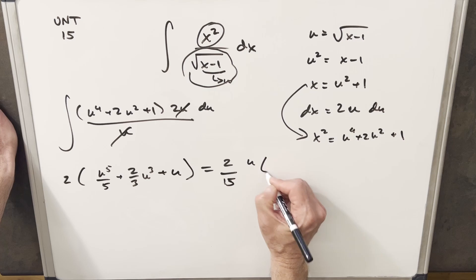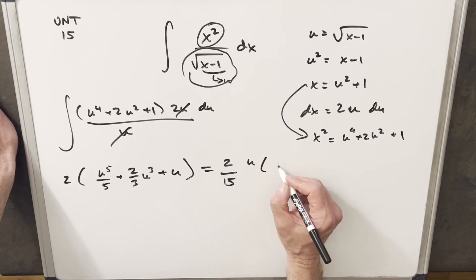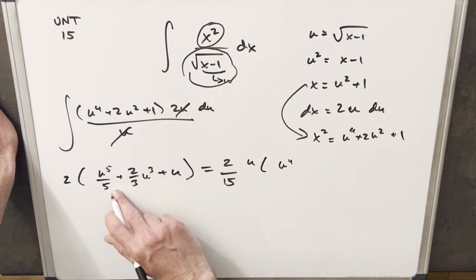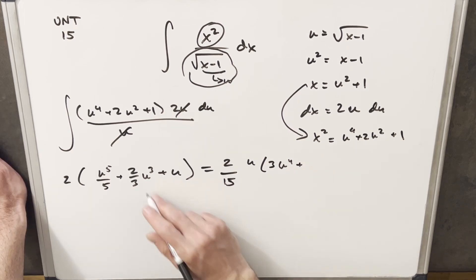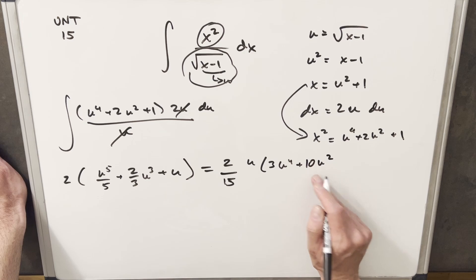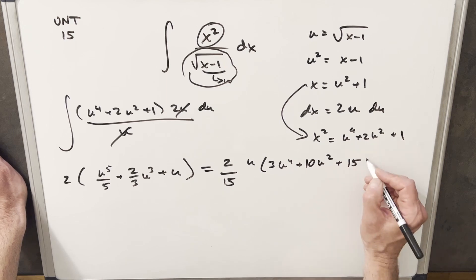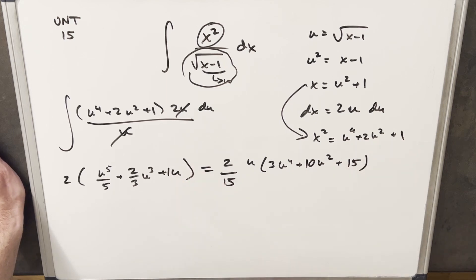So we'll have 2 over 15 times u. And then inside, this is going to give us, let's see, we're going to have u to the 4th. And this is going to be a 3 here. Then for this next term, this is going to be a u squared. And I think this is going to be, with the 15, this is going to give us 10 as a coefficient here. And this last term is just going to be 15.